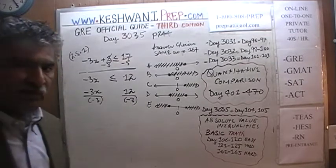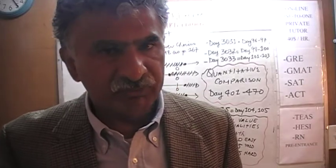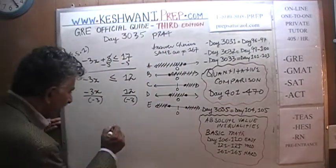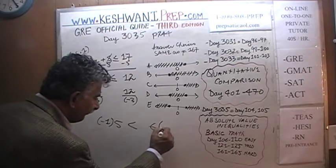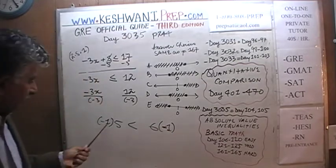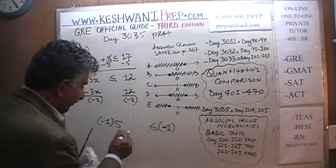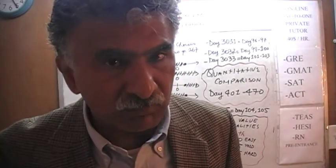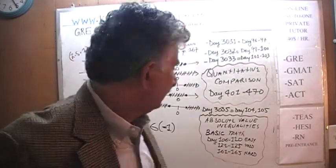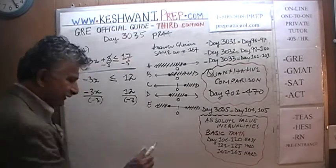As soon as you multiply or divide an inequality by a negative quantity, you must remember to reverse the direction. For example, everybody knows that 5 is less than 6. But if you multiply both sides by negative 1, negative 5 is not less than negative 6 — negative 5 is actually greater than negative 6. We must remember to switch the sign. As soon as you multiply or divide an inequality by a negative quantity, we must reverse the direction. That's the only tricky part here — the rest is very simple and straightforward.